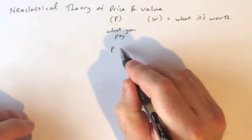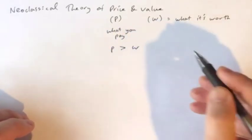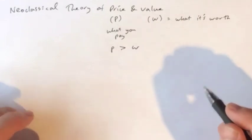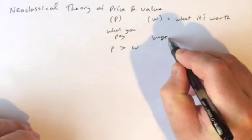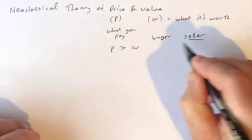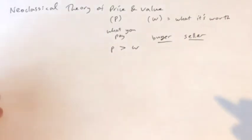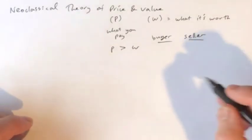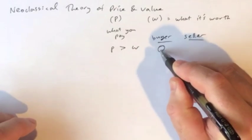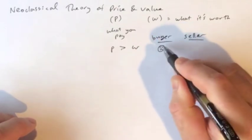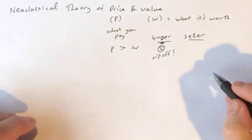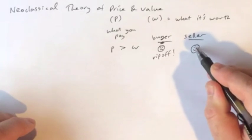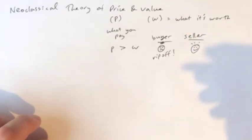This leads to different possibilities. For example, it's possible that the price that you pay in the market is greater than the value. And here we have a difference in point of view, right, how the buyer might regard this situation versus how the seller might regard it. The buyer is probably going to be pretty unhappy with this situation. They just got ripped off.